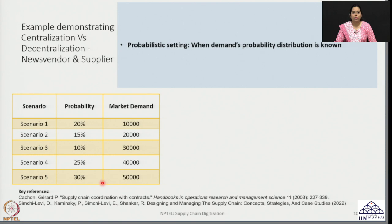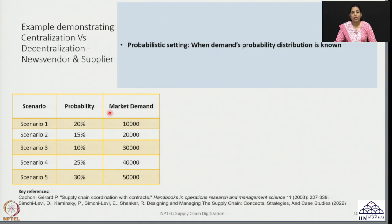The news vendor has to have at least this much information a priori before taking decisions on the appropriate order size and the resulting profits for the players — the supplier, the news vendor, and the supply chain. We could also have continuous probability distributions for demand, but for simplicity I am taking this discrete example to explore the role of decentralization and centralization and the potential issues that could occur.